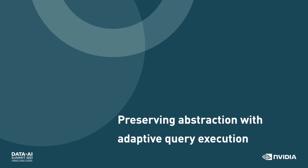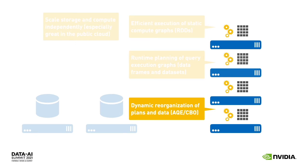Tuning performance a priori is difficult — it's better if we can defer some decisions to runtime. We talked about how Spark has become more dynamic over the years, going from efficient execution of static compute graphs implied by RDD operations to query planning at runtime. And now what we're going to talk about is how we can reorganize our data in response to its dynamic distribution. This is what we're doing with adaptive query execution.